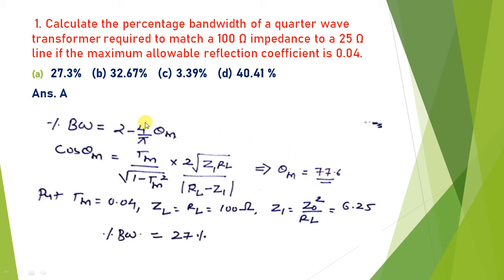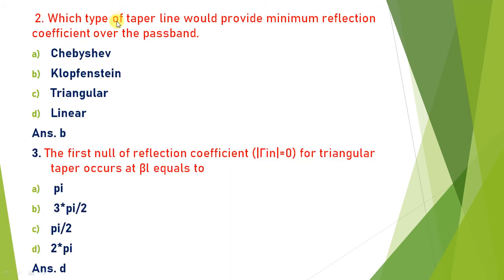Now put the value of θm into the bandwidth equation, treating π as 180°. You get the fractional bandwidth equal to 27.3%. So the answer is (a) 27.3% — that is the fractional bandwidth of the quarter wave transformer.